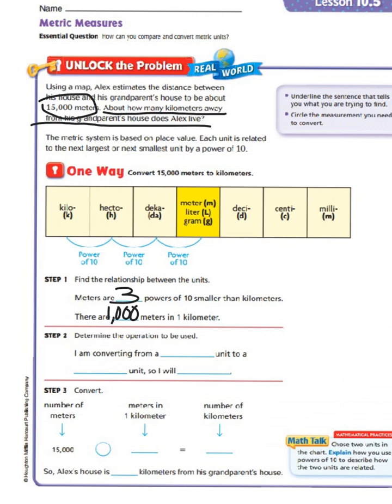Step two says determine the operation to be used. Well I am converting from meters, which is smaller, so it's a smaller unit to kilometers, so we're going from a smaller unit to a bigger or larger unit. So I will divide. We know that going from smaller to bigger we are going to divide.